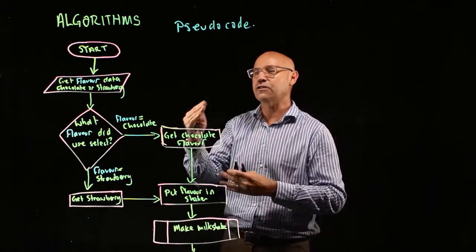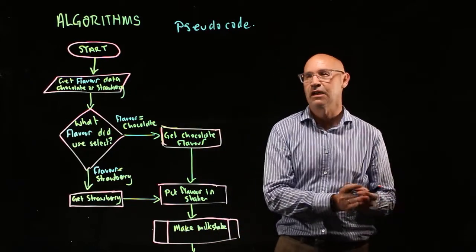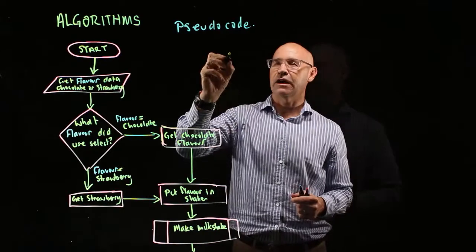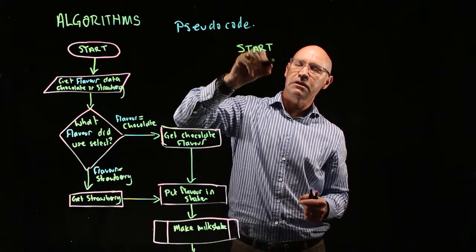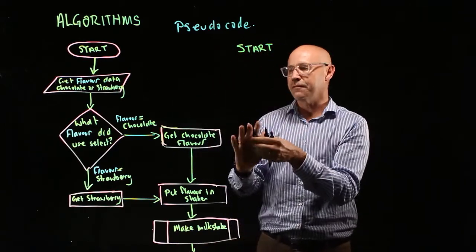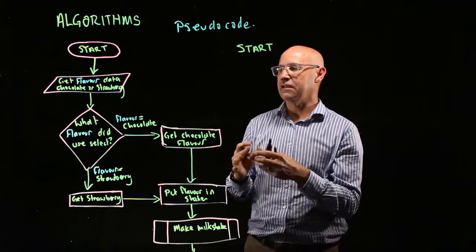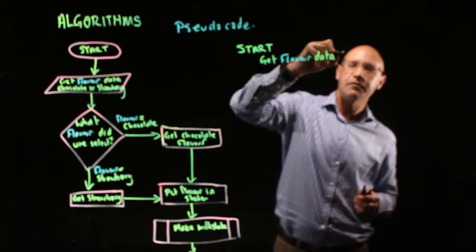So it still helps you get the sequence right for your algorithm. So let's put this into pseudocode. We start with our START, that's capital, and then we indent from there for the next steps. So the next step is getting our flavor data: get flavor data from user.